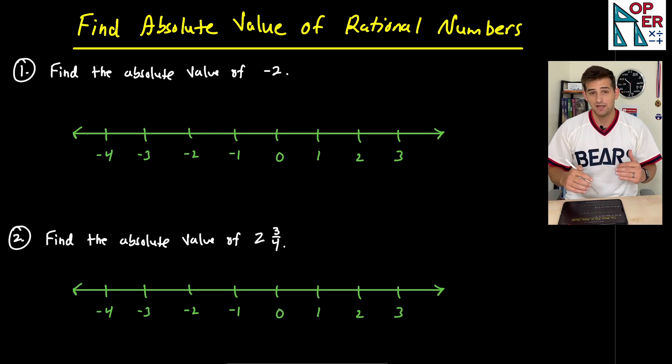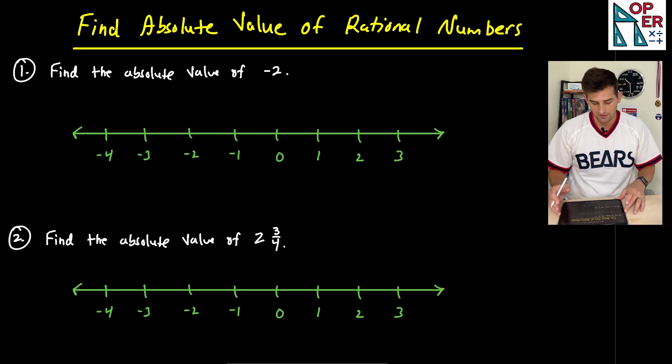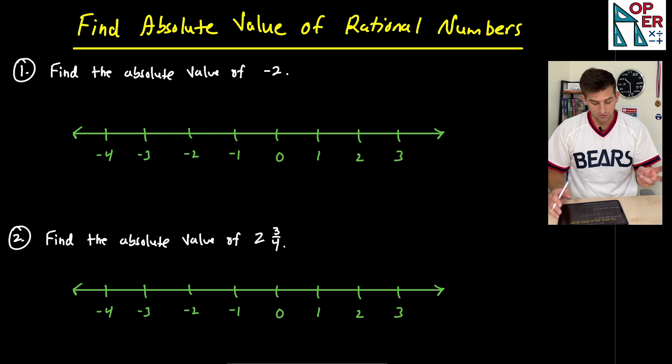In this video, we're going to use a number line and try and draw out to find out what the absolute value of a rational number is. For right now, we're going to do two examples. Number one, we're going to find the absolute value of negative two.